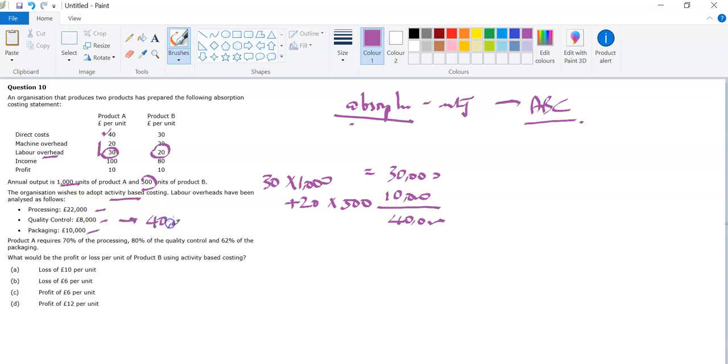What activity-based costing is telling you is that instead of just splitting this 40,000 based on units, which is typical absorption costing, we can actually break it down and tell you what's causing it. That means we can have a better way of splitting this overhead, rather than just assuming it's driven by units. It's actually driven by these factors: product A requires 70% of processing, so they should take 70% of these costs, and product B should take 80% of these costs.